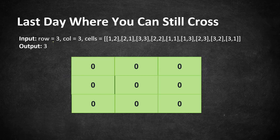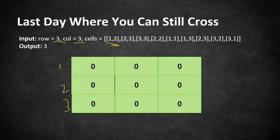The input given here is a three-by-three matrix and all the cells are filled with zeros which represent land. The matrix is one-indexed, so rows and columns start from one, two, and three. We start with day one, where index one comma two will be flooded with water. Our task is to reach from the topmost row to the bottommost row.